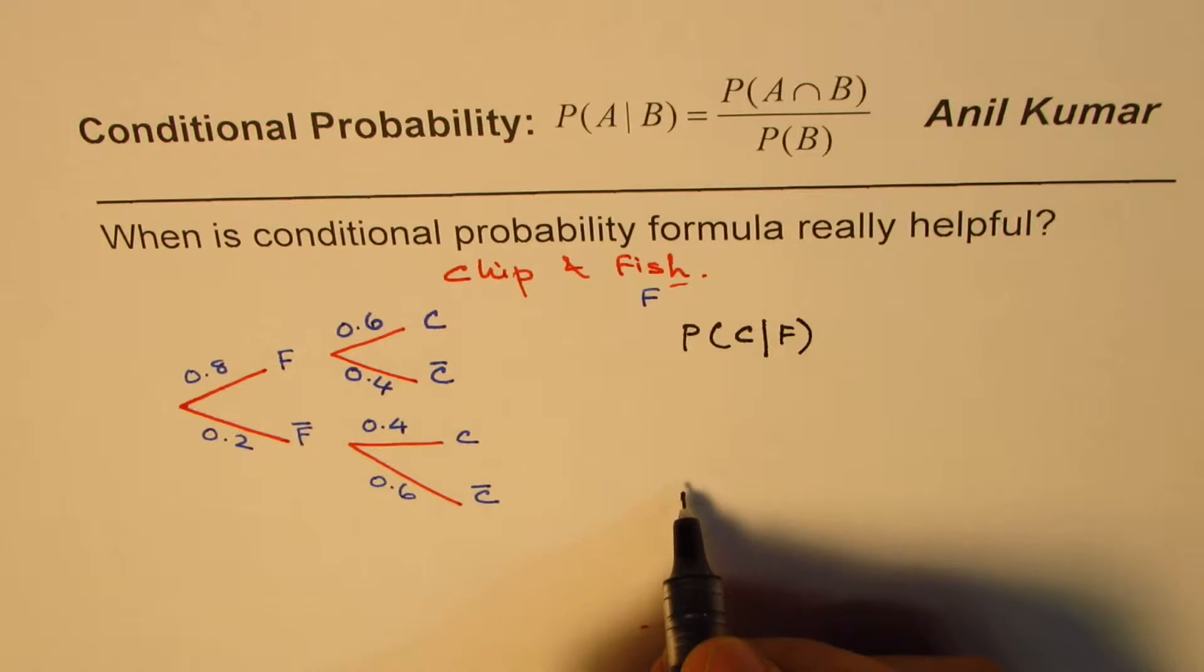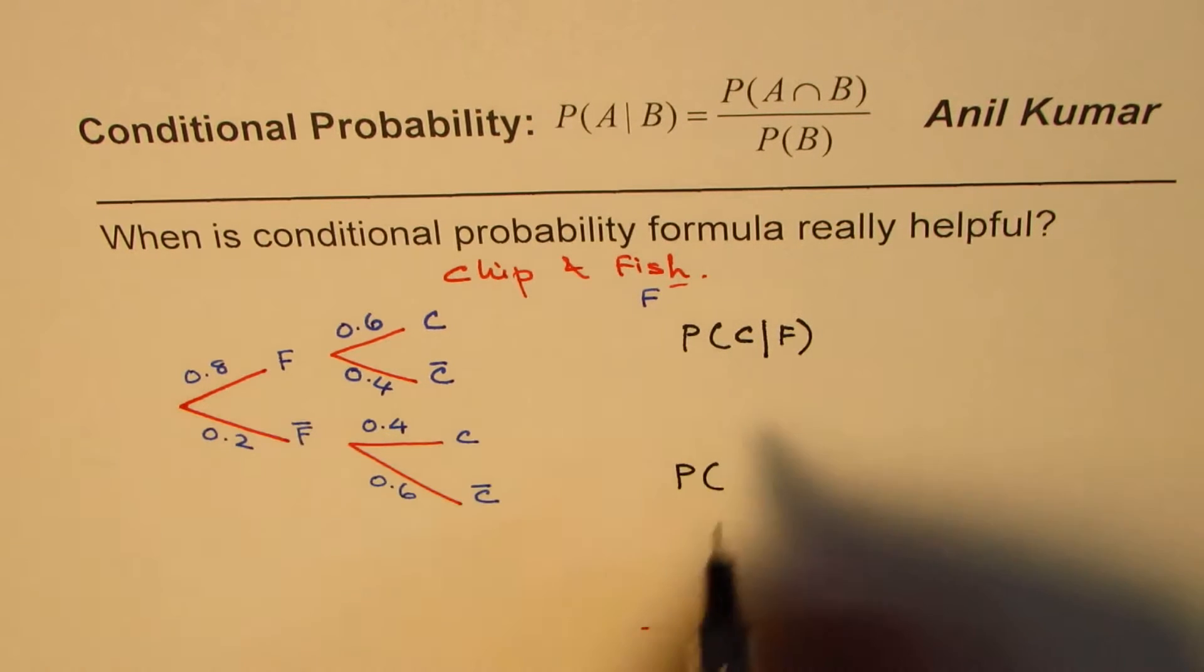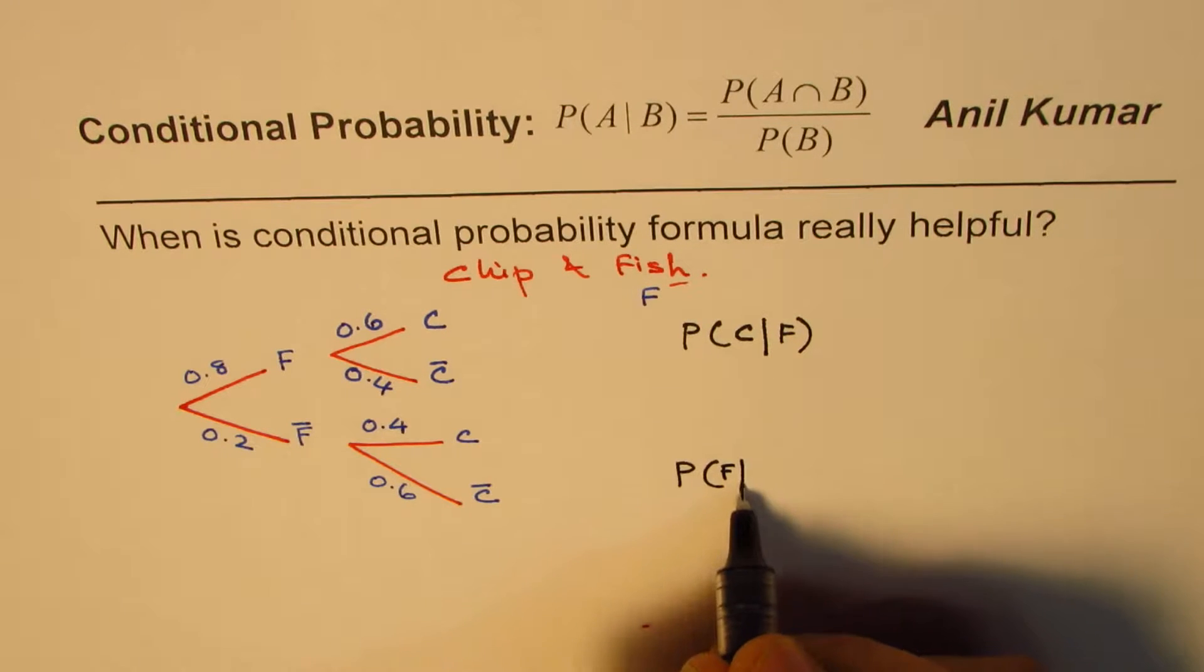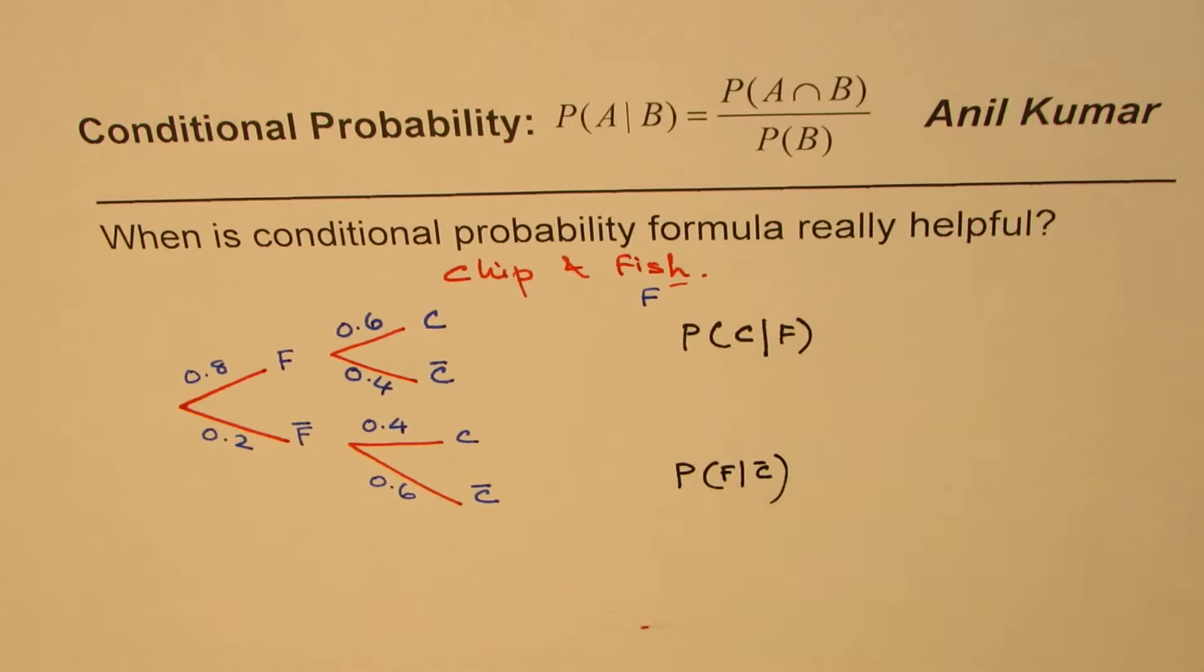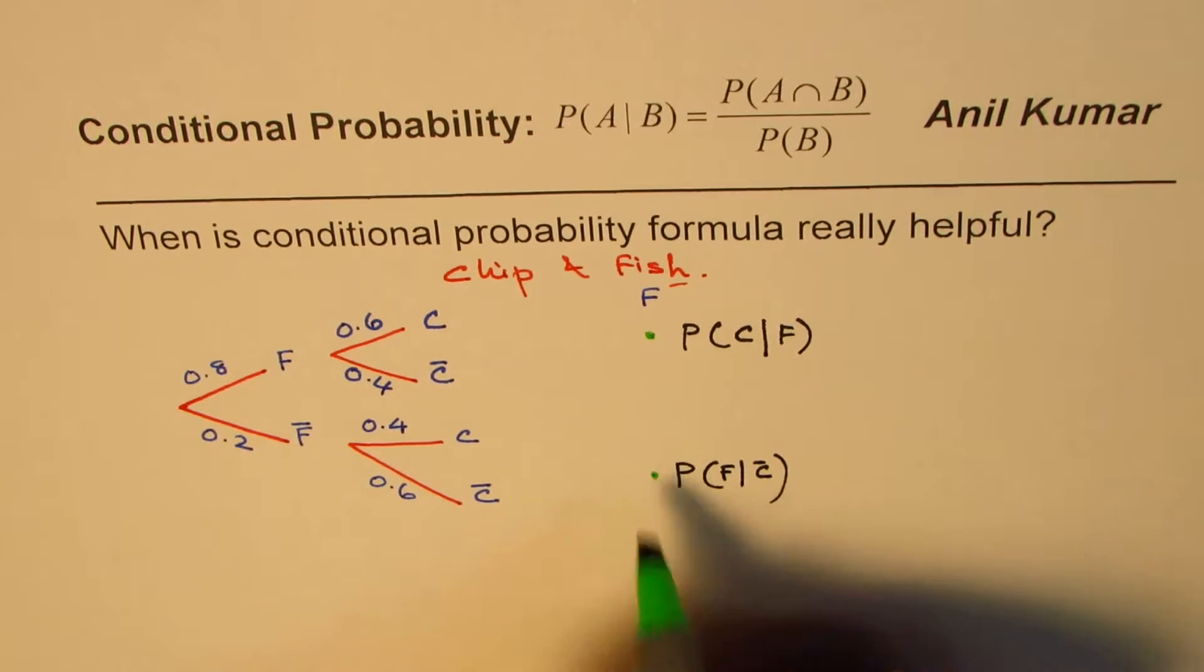And the second question which we will consider will be what is the probability of a customer ordering for, well, go it reverse this way. Fish, when we know that chips are not being ordered? So these are the two questions which we are going to consider to explain when is this formula very, very helpful.